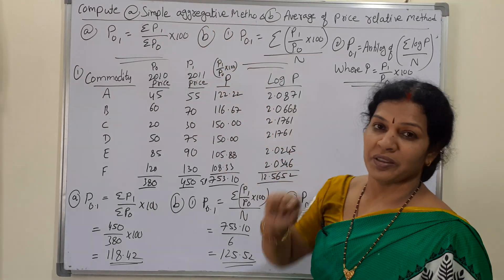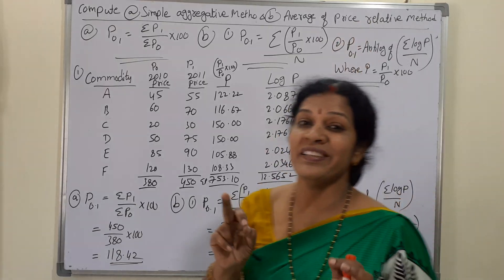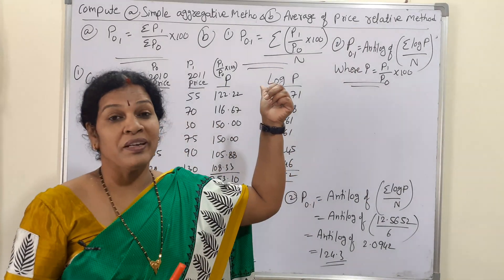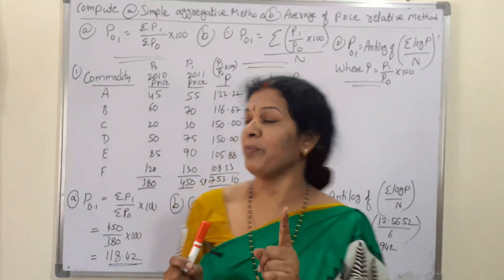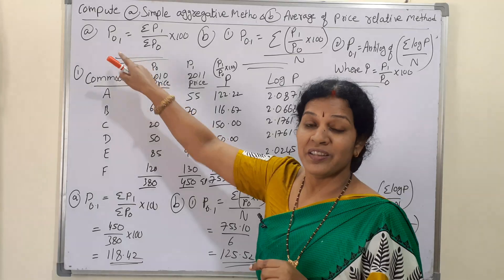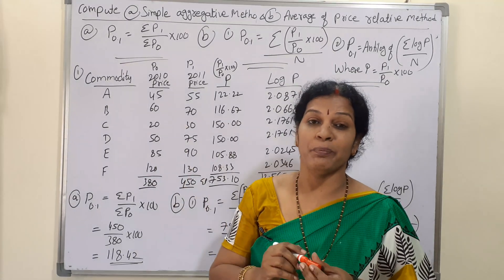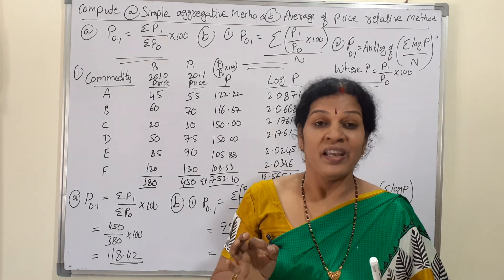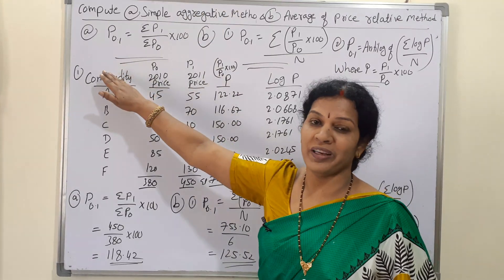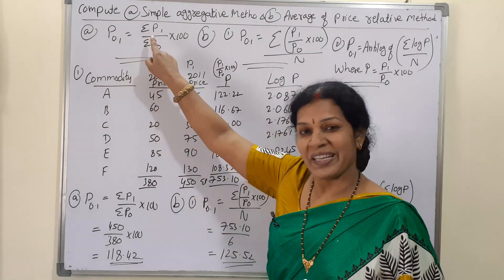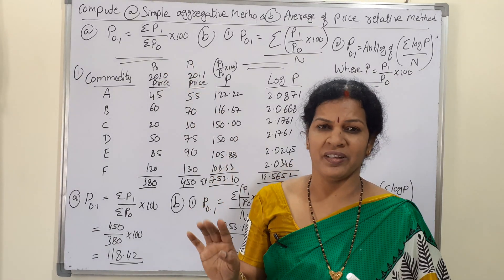The two types of unweighted index numbers we need to compute are: first, the simple aggregative method, and second, the average of price relative method. For the simple aggregative method, we use the notation P₀.₁, which indicates an unweighted index number. The formula is P₀.₁ = (ΣP₁ / ΣP₀) × 100.